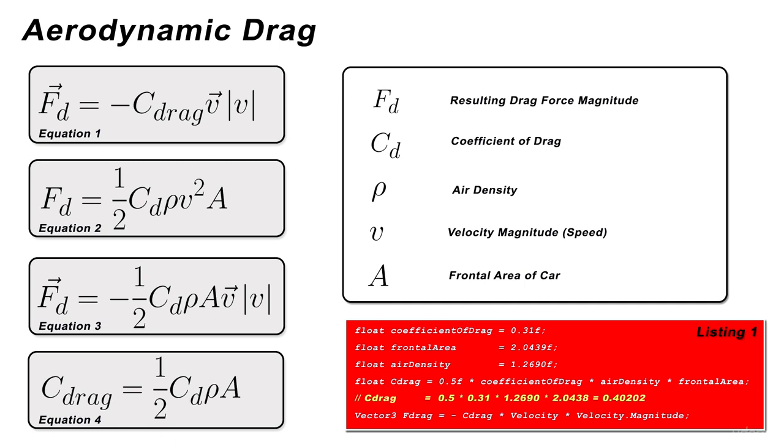A quick search online informed me this equated to an air density of approximately 1.2690. We could then compute C_drag and the final drag force vector as shown on the slide in listing one.